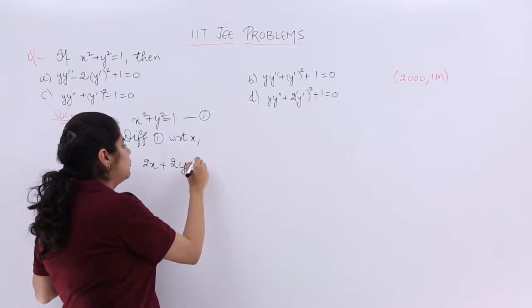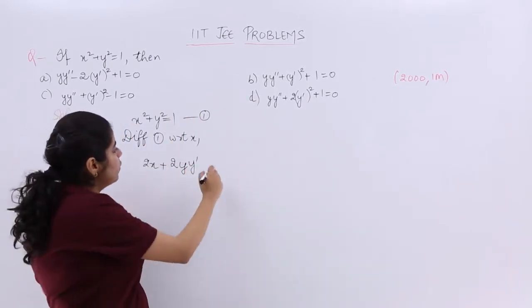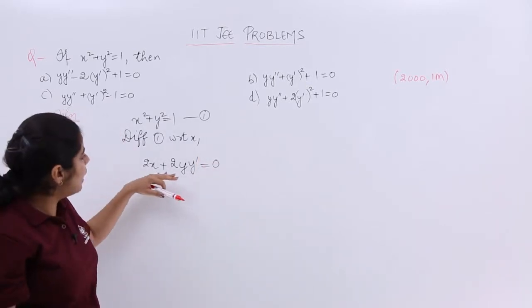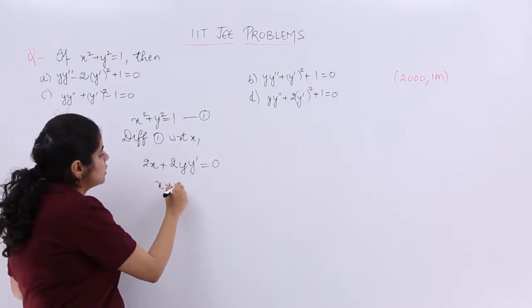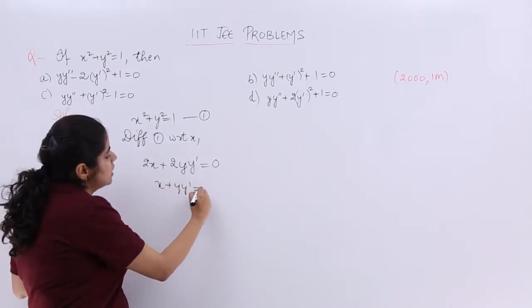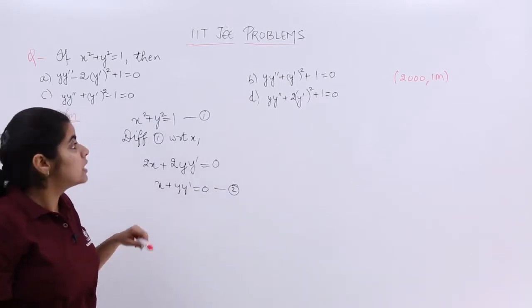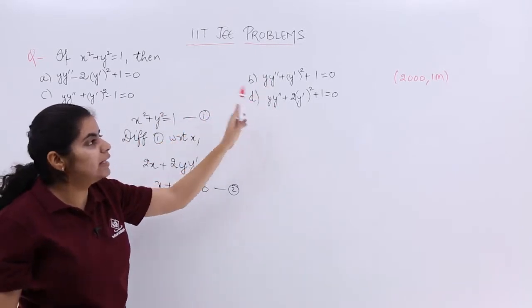dy/dx is written y' because in this question everywhere you find y'. 1 being a constant, let's make it 0. Now you have got something of this sort. Let's take 2 common. So it becomes x plus yy' is equal to 0 and let's name this as equation number 2.